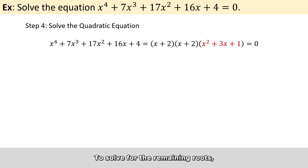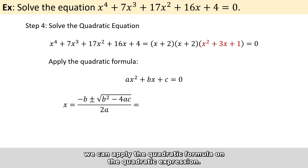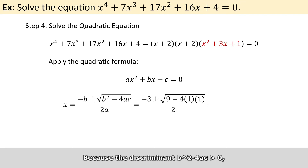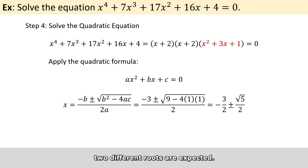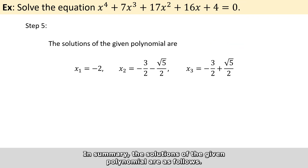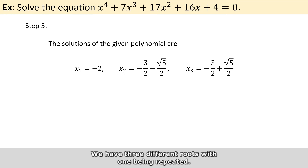And to solve for the remaining roots, we can apply the quadratic formula on the quadratic expression. Because the discriminant b squared minus 4ac is greater than zero, two different roots are expected. We get x equals minus 3 over 2 plus or minus square root of 5 over 2. So in summary, the solutions of the given polynomial are as follows. We have three different roots with one being repeated.